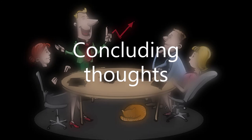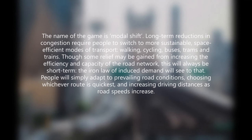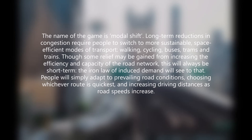Concluding thoughts. The name of the game is modal shift. Long-term reductions in congestion require people to switch to more sustainable, space-efficient modes of transport: walking, cycling, buses, trams and trains. Though some relief may be gained from increasing the efficiency and capacity of the road network, this will always be short term — the iron law of induced demand will see to that. People will simply adapt to prevailing road conditions, choosing whichever route is quickest, and increasing driving distances as road speeds increase.